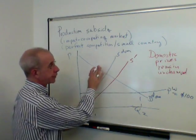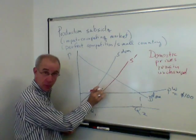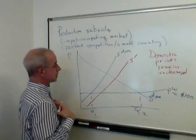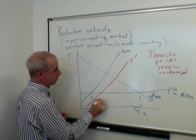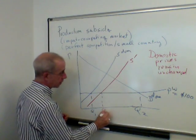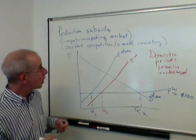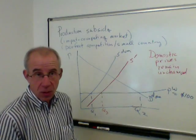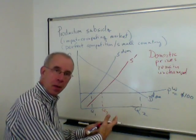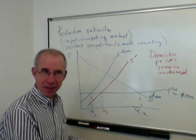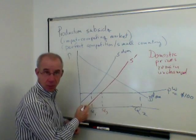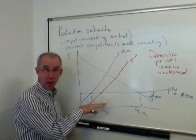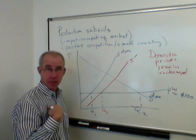The decrease in the effective production cost as perceived by the domestic producer increases the quantity produced to Q3 — that is where the firm's perceived marginal cost, their direct cost reflective of the subsidy, shown by this red line, causes the marginal cost to drop as perceived by the domestic firm.